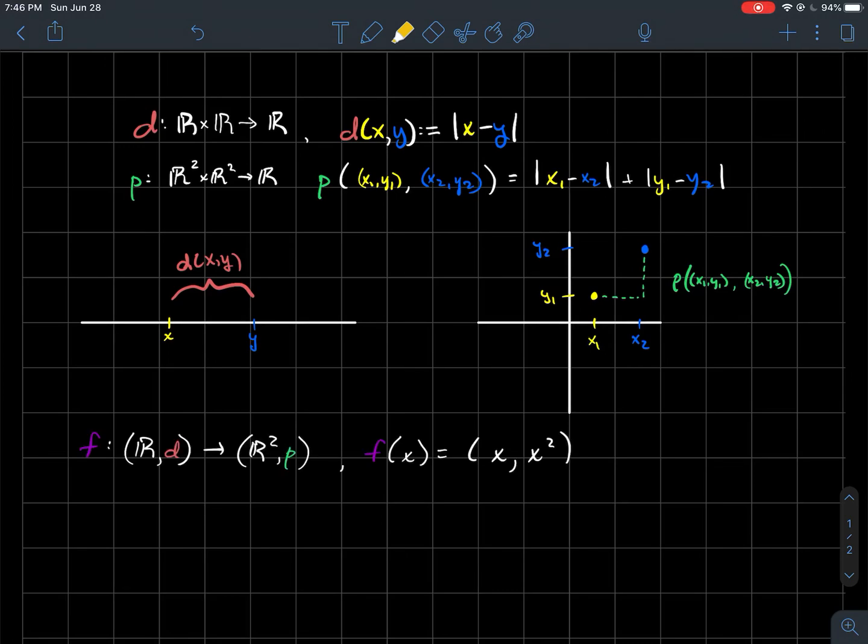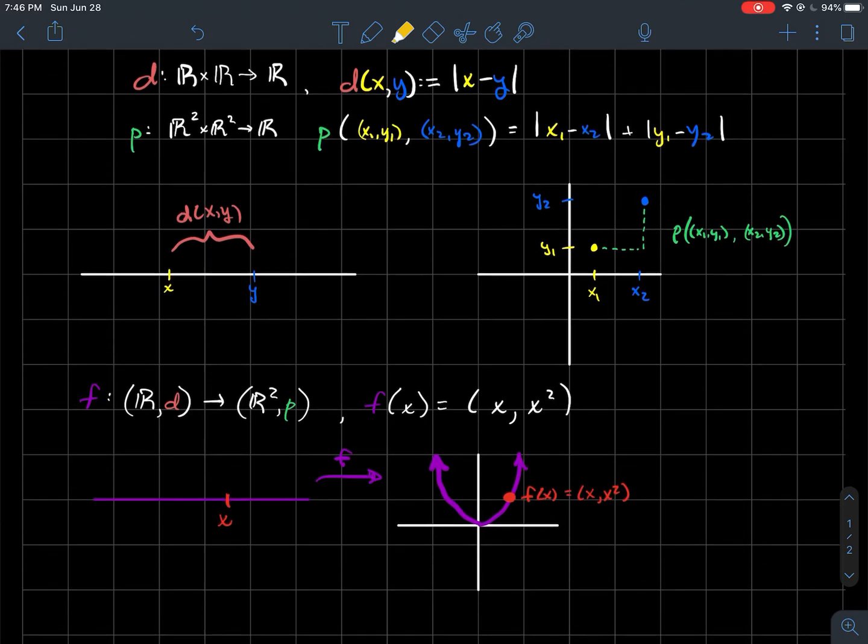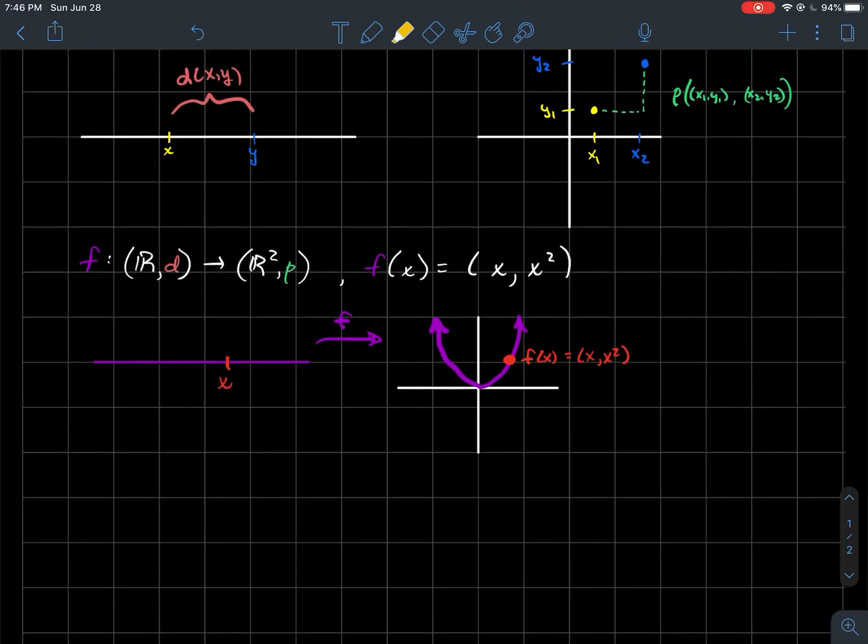So now let's say I've got a function that goes from the real numbers to the plane. And let's say that the function just takes a real number, and it spits out the point x comma x squared. That kind of, if you've had calc three, that kind of looks like a parametric representation of your favorite parabola, y equals x squared. And that's what it is. So that's exactly how you should think of it. F is this function that takes a real number x, which is in red there, and it takes it to that point on the graph, x comma x squared.